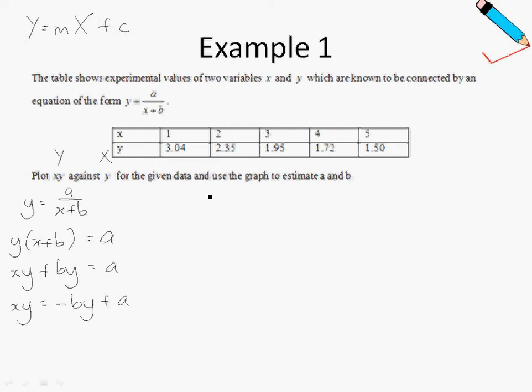Let us first identify our big Y. Our big Y is xy over here. Our big X is y over here. Our m is negative b and our c is just a.